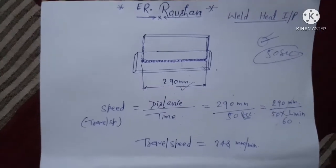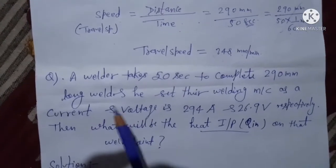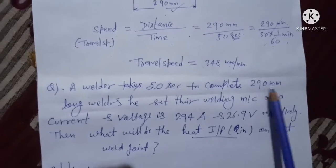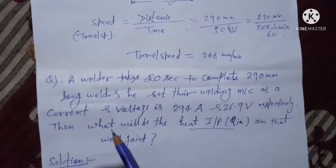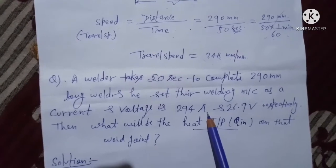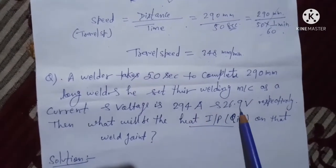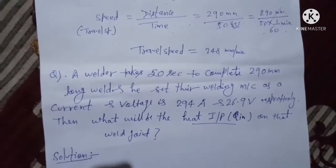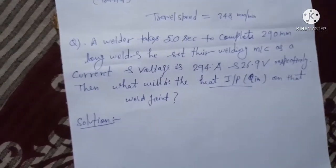So the question formed is like this: a welder takes 50 seconds to complete a 290 mm long weld, and the welding machine is set at a current of 294 ampere and voltage of 26.9 volt respectively. What will be the heat input, or what heat is required to complete this welding joint? Now your solution starts.